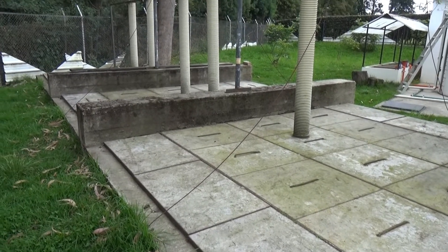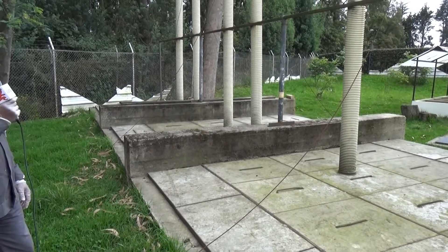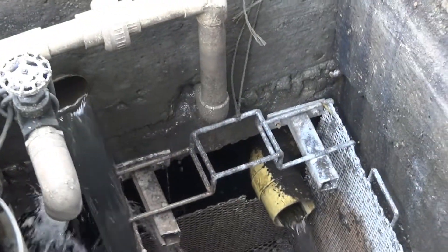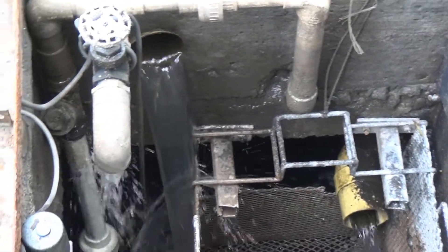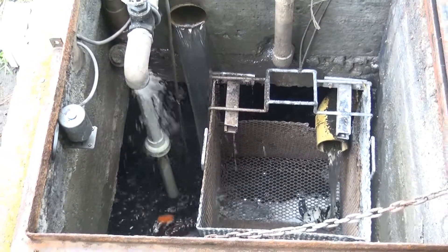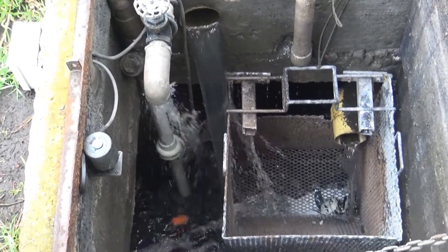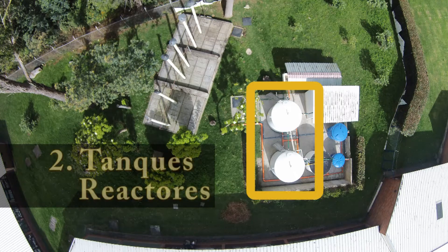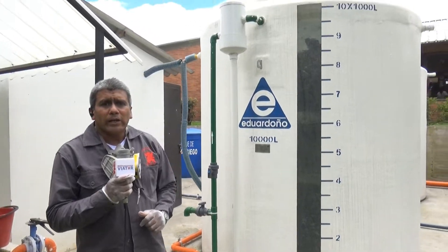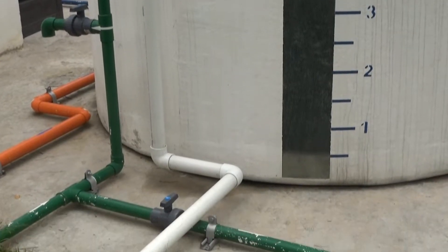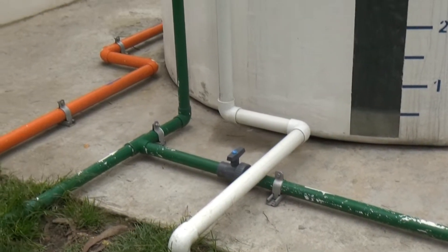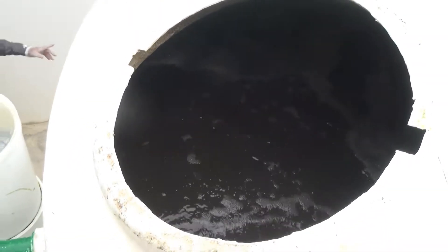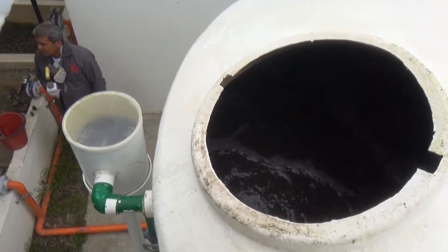The homogenization tank has a pump in its interior. This pump pushes the residual water towards the reactor tanks, and there also begins the oxidation of the sludge. We are now at the second part of the plant, which are the reactor tanks. Here the organic material from the septic tank or homogenization tank undergoes sludge oxidation.